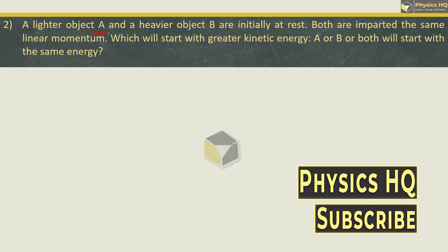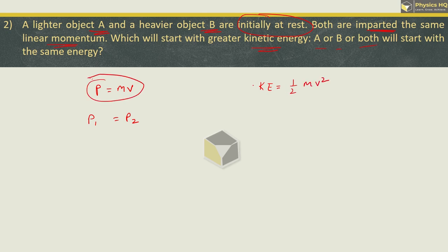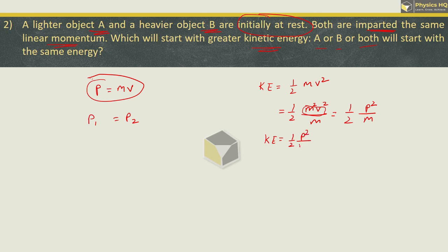Next: a lighter object A and a heavier object B are initially at rest. Both are imparted the same linear momentum. The linear momentum formula is mass × velocity, so P1 = P2. Which one will have greater kinetic energy? Kinetic energy is ½mv². We can rewrite this as (m²v²) / (2m) = P² / (2m). So kinetic energy equals half times P² divided by m.